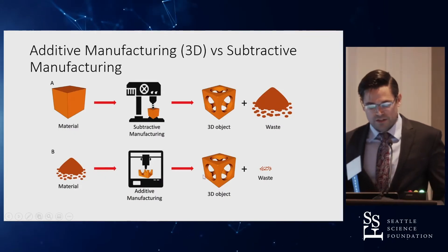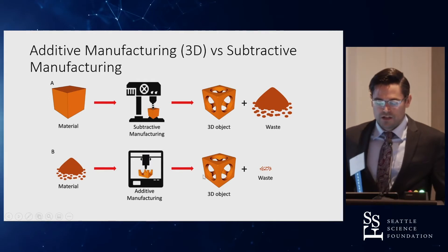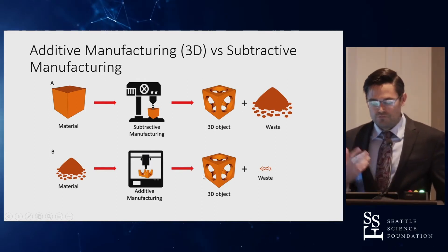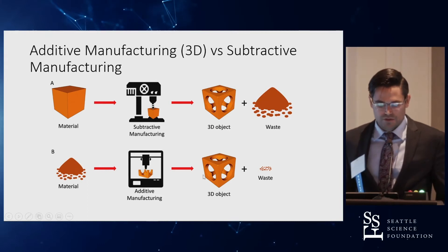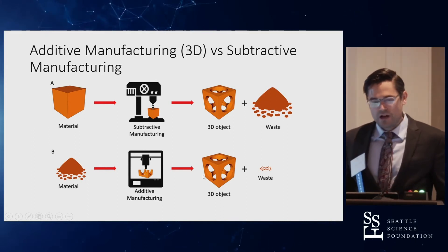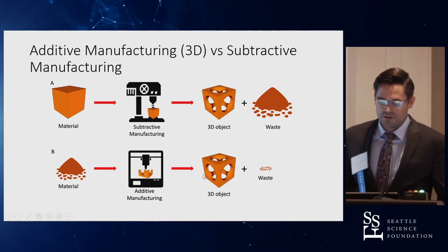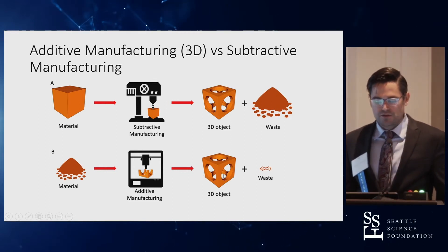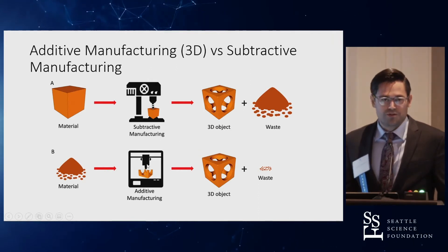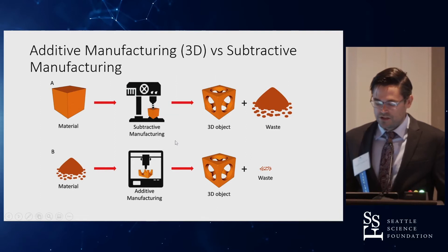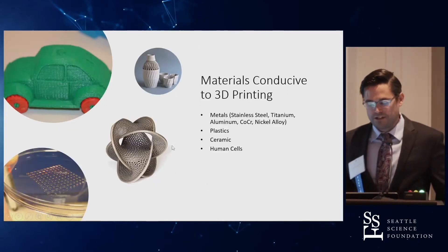The basic idea is that with subtractive manufacturing you start with a large block of material, remove it, and end up with waste alongside your 3D object. In 3D printing it's the opposite — you start with a smaller amount of basic material and create a complex three-dimensional structure with less waste. So why don't we do this all the time? Technology constraints and cost, but those things are changing.